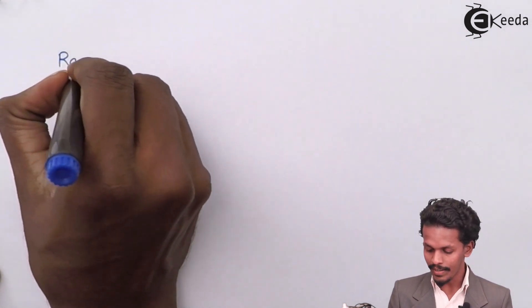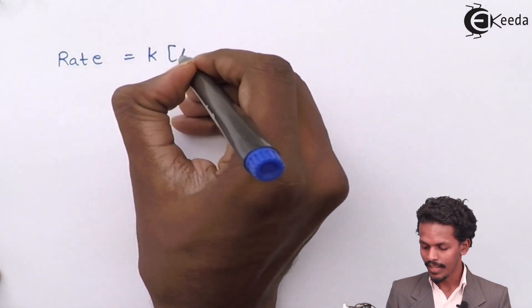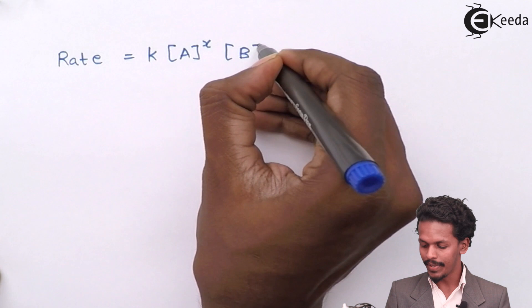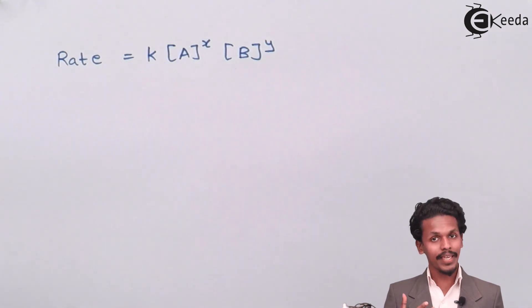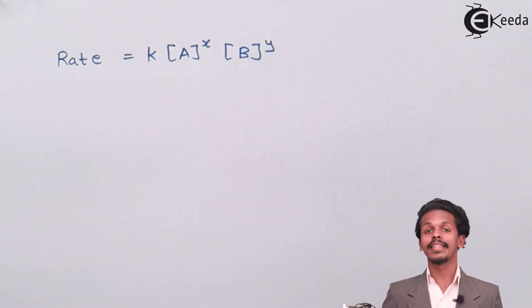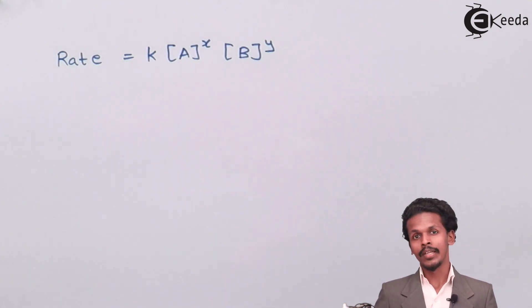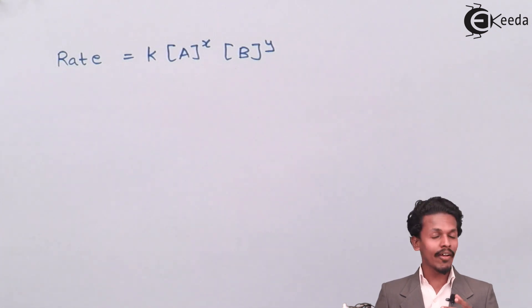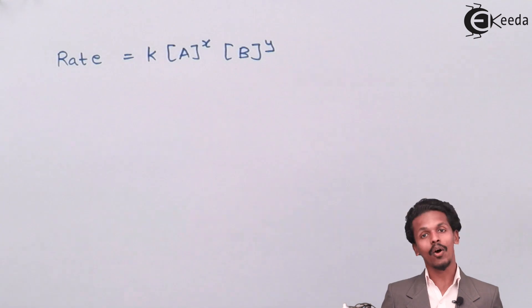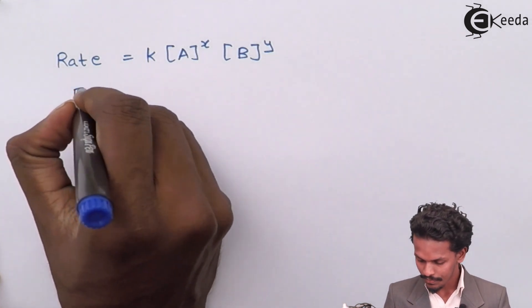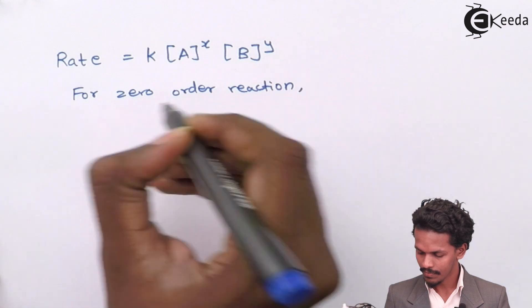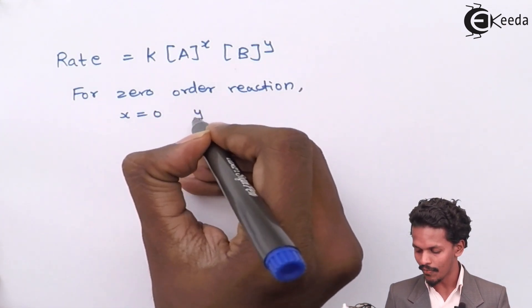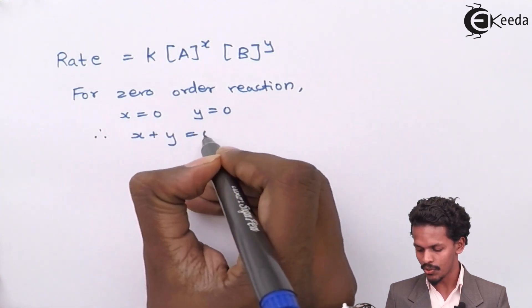Similarly, if I write the rate law equation: rate equals k times A raised to x times B raised to y. For a zero-order reaction, both x and y should equal 0, so that x plus y equals 0. This is only possible when x equals 0 and y also equals 0.